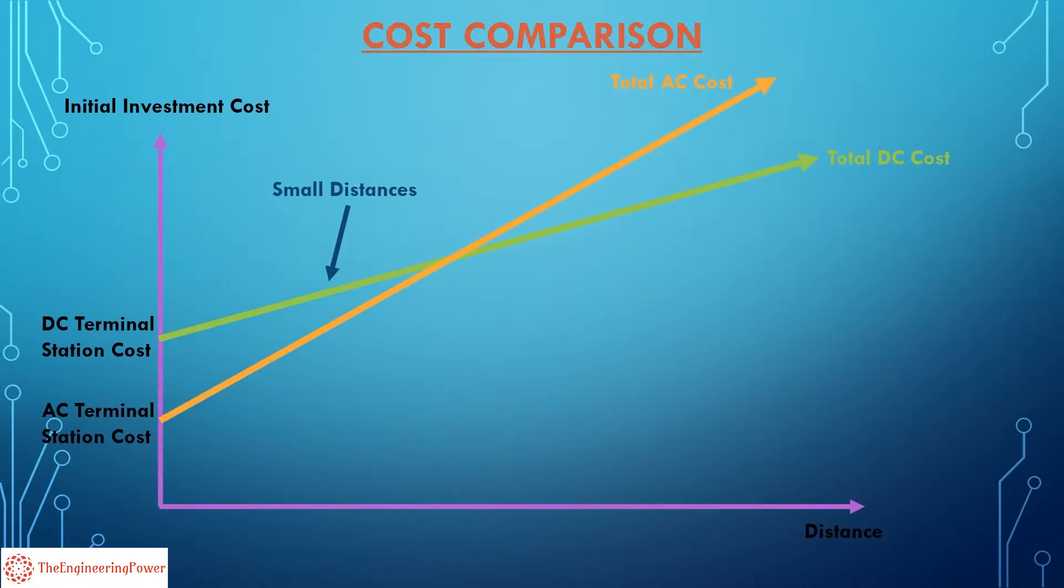For small distances, the overall cost of HVDC transmission system is greater than that of HVAC system. For a specific distance, HVDC system becomes cheaper than HVAC. This distance is called the breakeven distance. The breakeven distance for overhead transmission line is around 600 kilometers. That's one of the main reasons behind the use of HVDC transmission system for power transmission over very long distances. So one of the main criteria behind the selection of AC or DC system for power transmission is the distance over which the power needs to be evacuated.